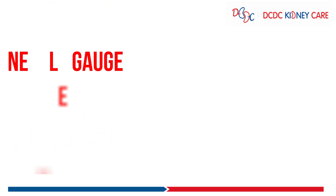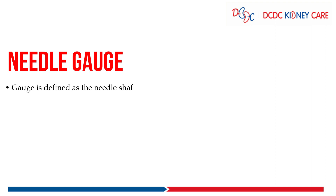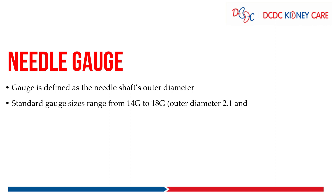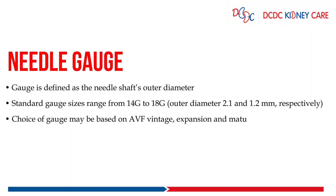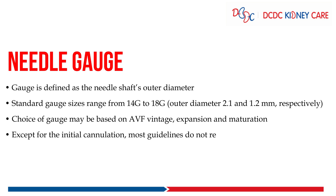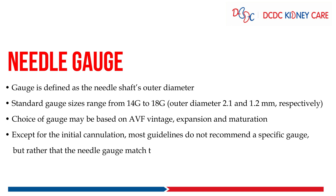The second attribute is needle gauge, defined as the outer diameter of the needle shaft. Generally, the gauge size ranges from 14 gauge to 18 gauge. It is markedly important that as the gauge size increases, the diameter decreases. That means the 14 gauge needle has a bigger diameter compared to the 18 gauge needle.